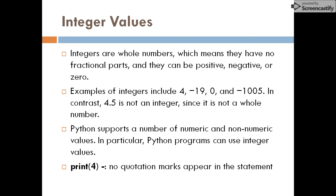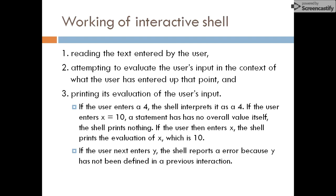For example, you can simply say print(4). Here, 4 is an integer value — we are not using any quotation marks. If you apply quotation marks it will be a different value, but without quotation marks it is a positive whole number, so it will be called an integer value.